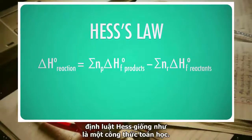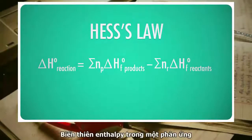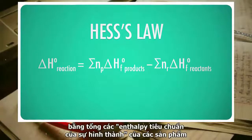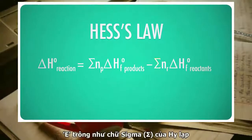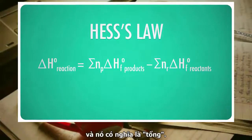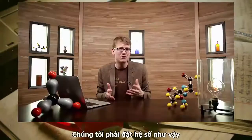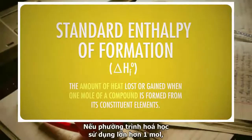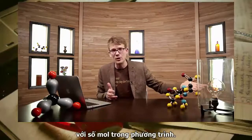Here is Hess's Law as a mathematical formula. The enthalpy change for a reaction equals the sum of the standard enthalpies of formation of the products minus the sum of the standard enthalpies of formation of the reactants. That pointy, funny e-looking thing is the capital Greek letter Sigma, and it means the sum of. NP and NR are the moles of each product and reactant, respectively. We have to factor that in because the standard enthalpy of formation is measured for just one mole of the substance. If a chemical equation uses more than that, we multiply the standard enthalpy of formation by the number of moles in the equation.